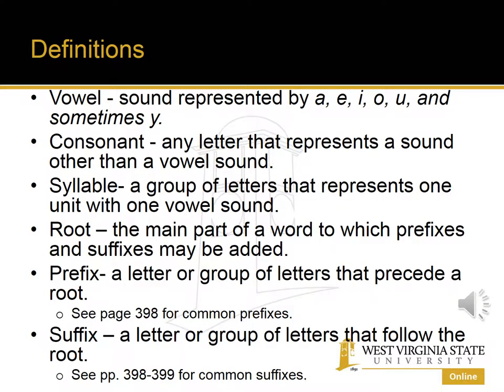Before getting into the specific rules of spelling in the English language, let's go over first some definitions of words that I will be using when discussing the rules for spelling. The first word is vowel. A vowel is a sound that's represented by A, E, I, O, U, and sometimes the letter Y.